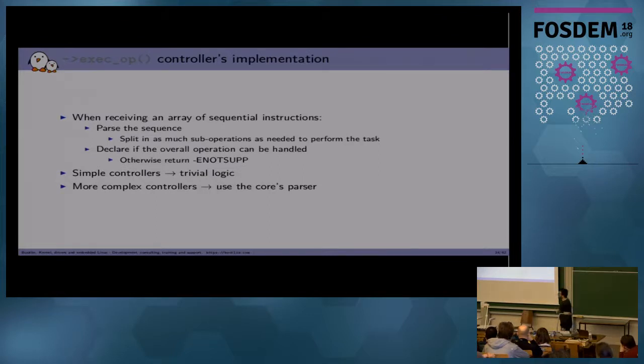So yeah, what do you have to do in the execop implementation from the controller driver side? You will receive an array of the instructions. First, you have to parse the sequence and split it in as much sub operation as needed. If you can't, if you think your controller won't handle this operation, you have to return an error. And this is another difference with the command func approach where no error code was returned if the operation couldn't be handled. This way, the NAND core will be able to maybe try another way. There are multiple ways to do the same thing with NAND. And the NAND core will be able to try with another operation to do the same thing, even if you lose a bit of throughput.